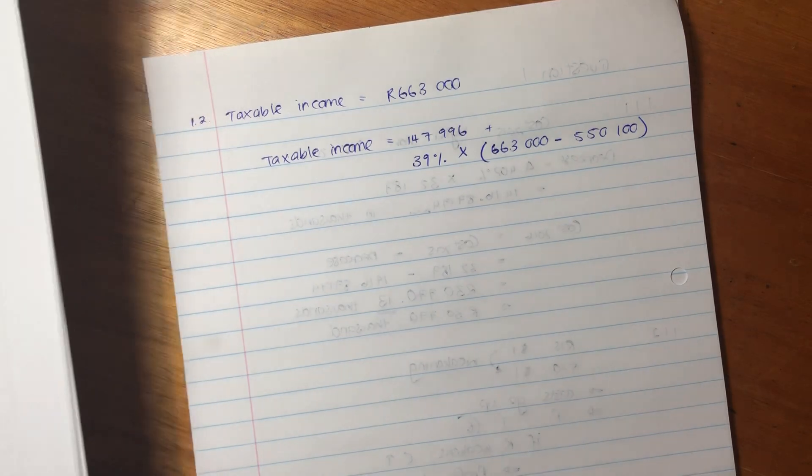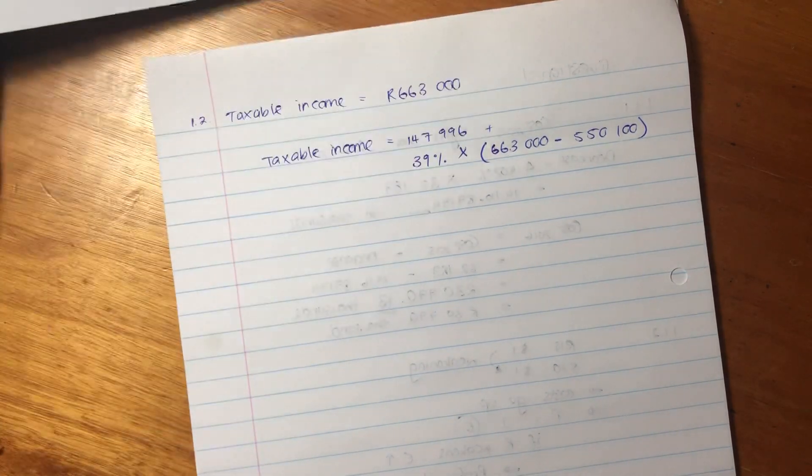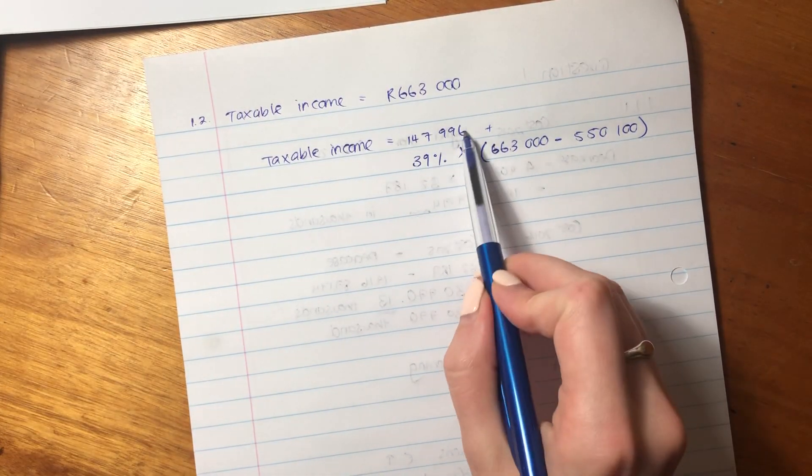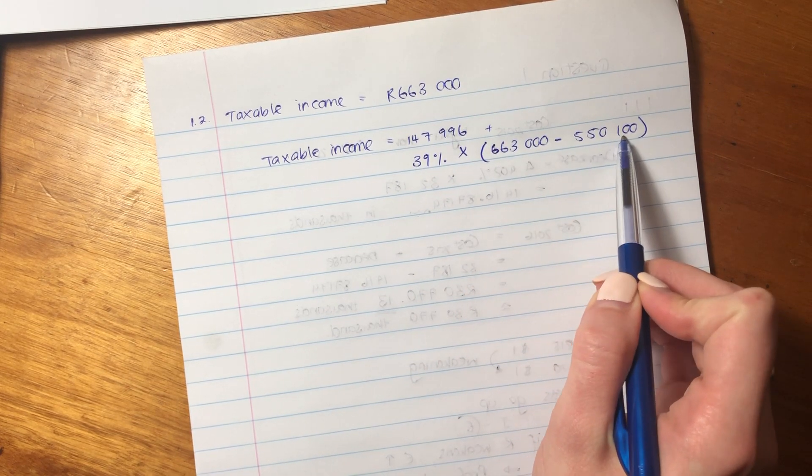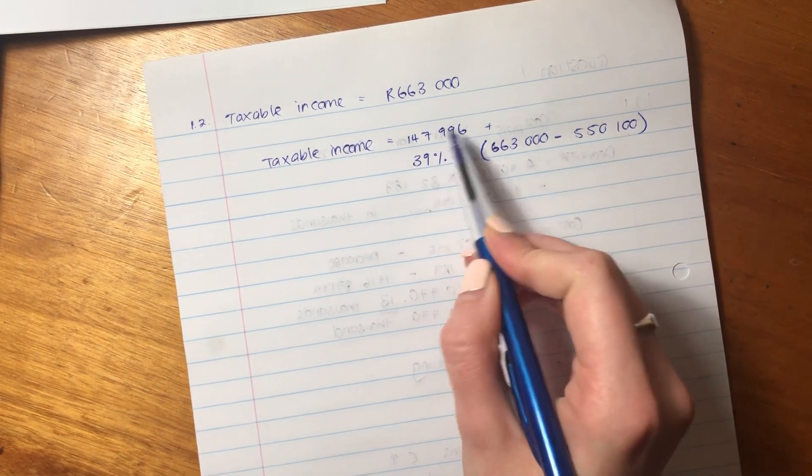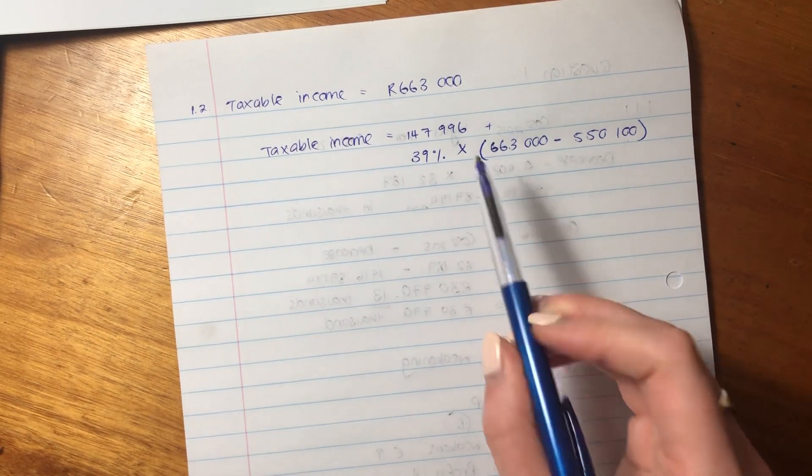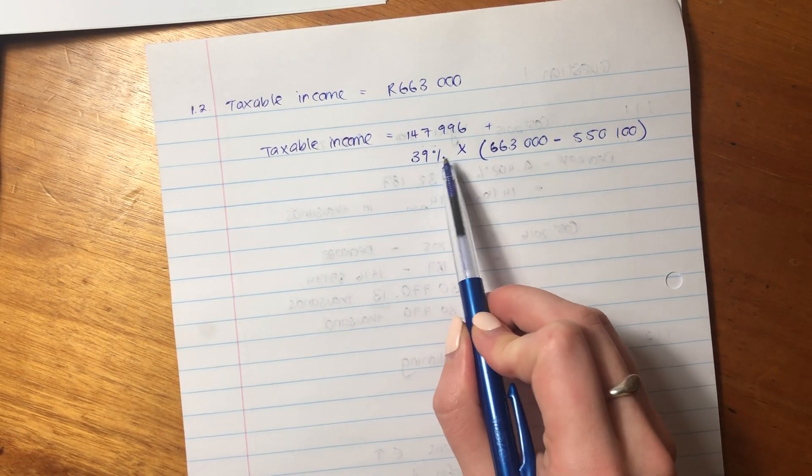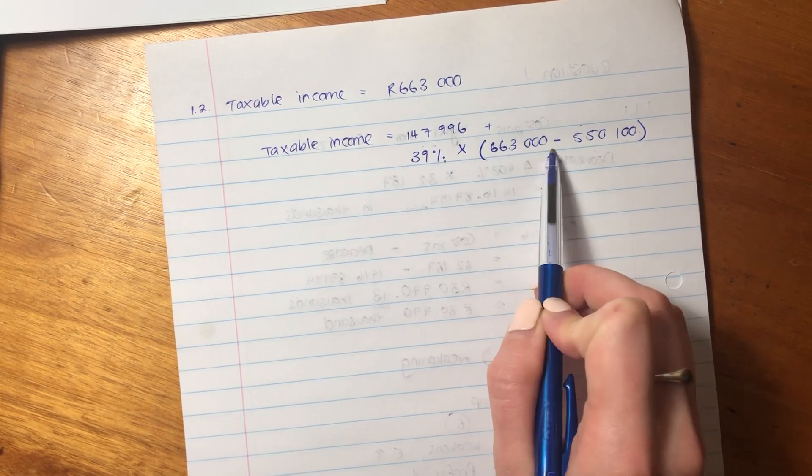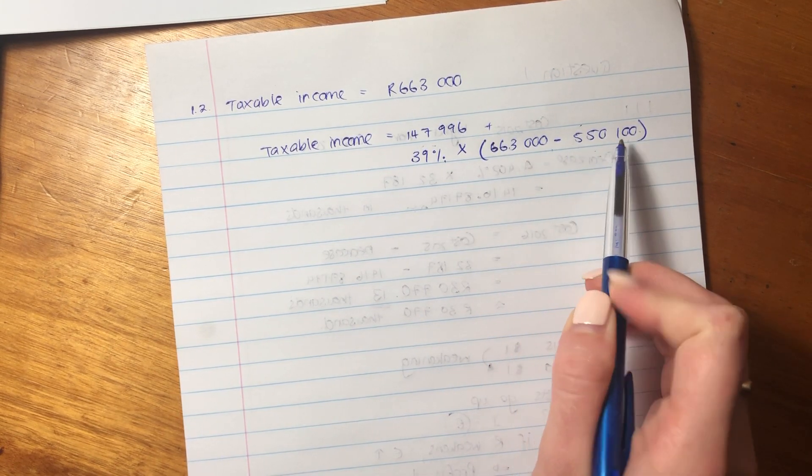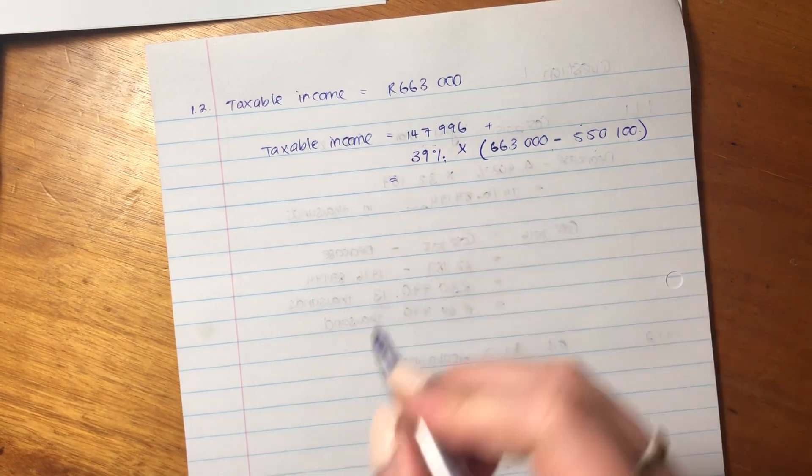Now you could be saying, Marks, I don't understand why we do this. Well, think about it. They're basically saying this is the amount of tax that he pays on the first $550,100 that he earns. We've accounted for that tax. All we're saying is this 39% is on the amount that he earns above that amount, which is the amount that he earns in total minus that amount. And that's how you calculate tax.